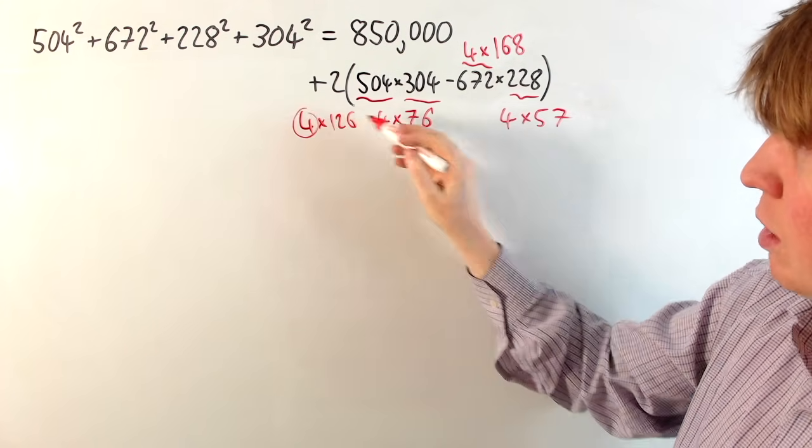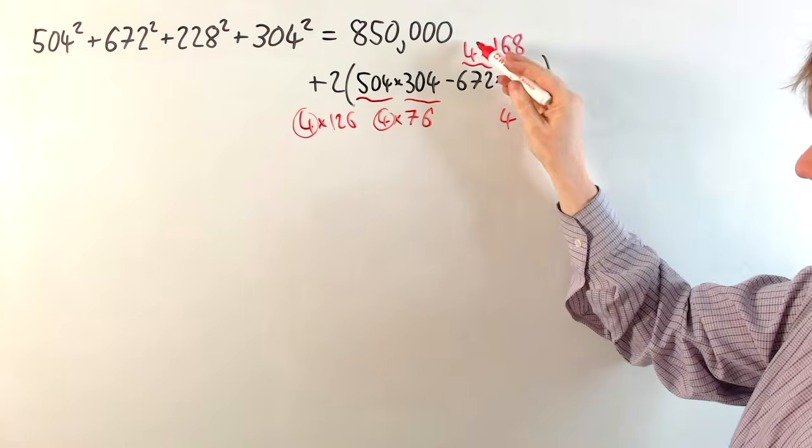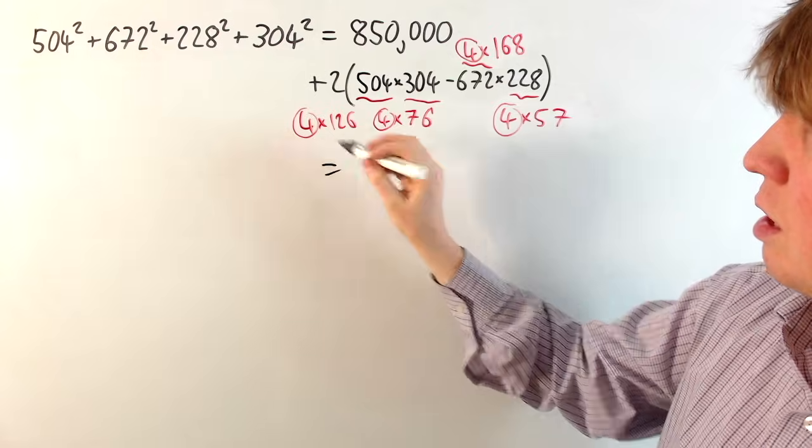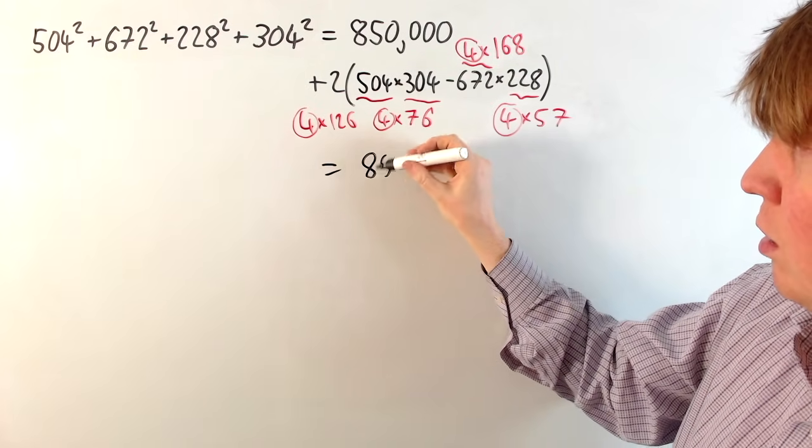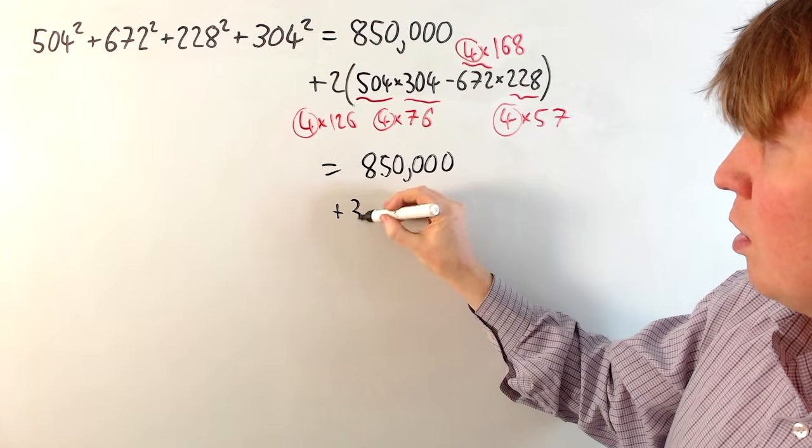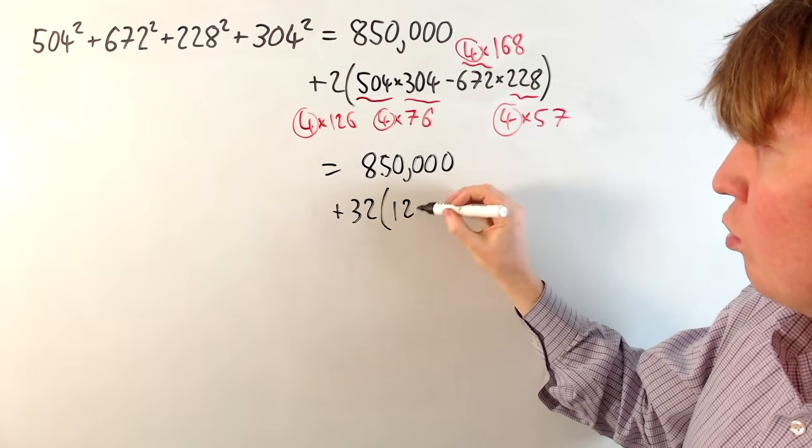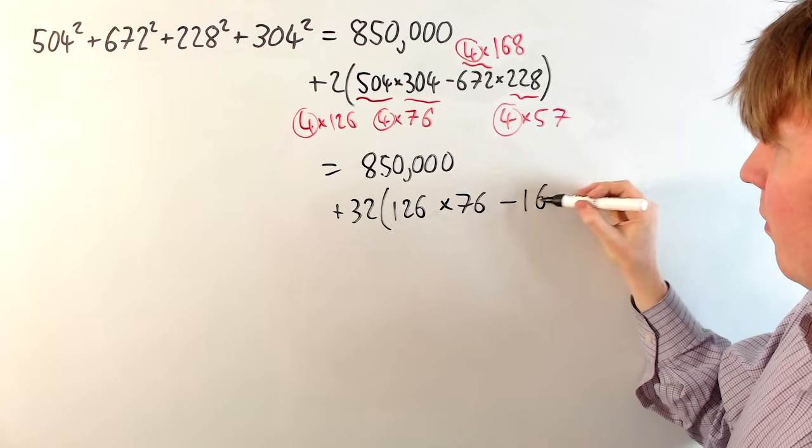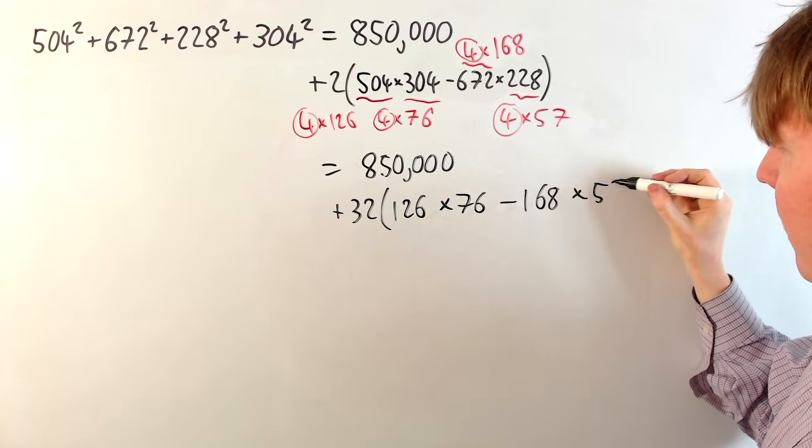So we can take out all of these 4s. We've got 16 in each of these. And we can multiply that by the 2 on the outside. So then our original expression is equal to 850,000. But then we've got plus 32 times 126 times 76 minus 168 times 57.